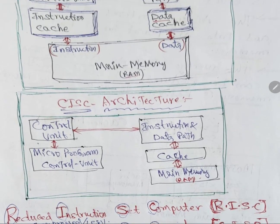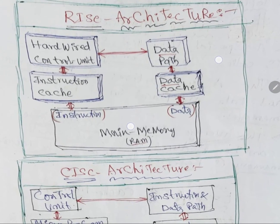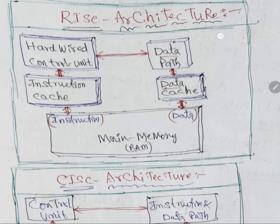So the architecture is something like this. Both RISC and CISC I am explaining in one video, as it is a short answer question. In RISC architecture, we have a Hardware Control Unit. Hardware means which hardware parts — gates, OR gates, circuits — are used to design the control unit.